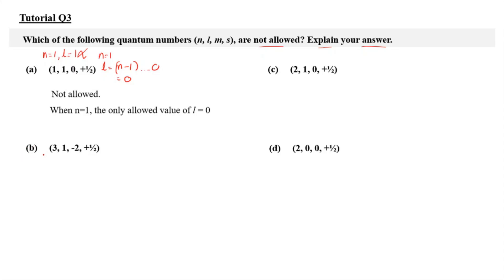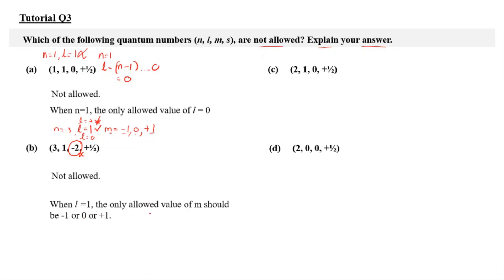For B, when n equals 3, l equals 1 — this is allowed, because l can be 0, 1, or 2. So l equal to 1 is acceptable. However, because l is chosen as 1, m must be dependent on l, giving three options: negative 1, 0, and plus 1. But the chosen m is negative 2, which is not allowed. So this n, l, m, s quantum number is not allowed, because when l equals 1, the only allowed values of m are negative 1, 0, or plus 1.